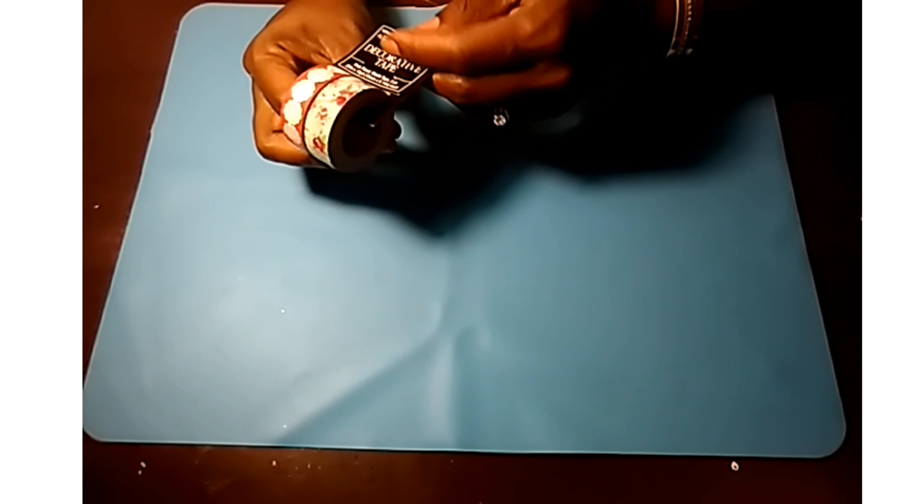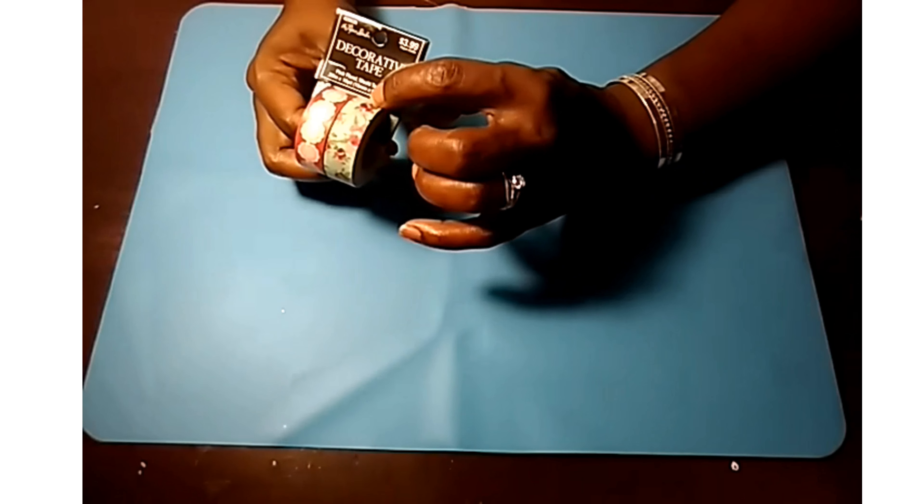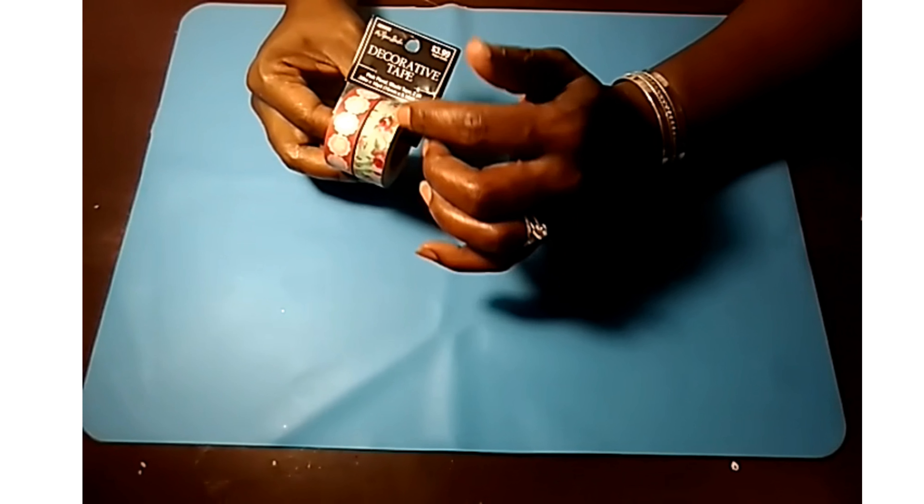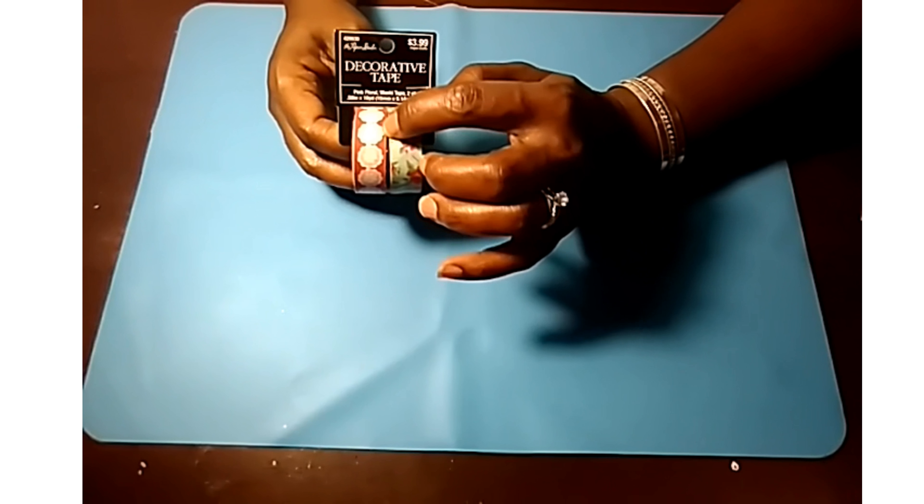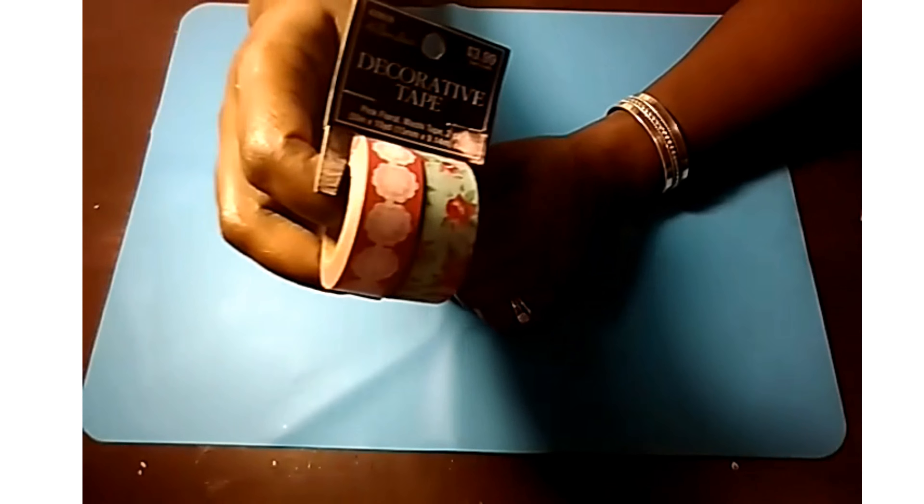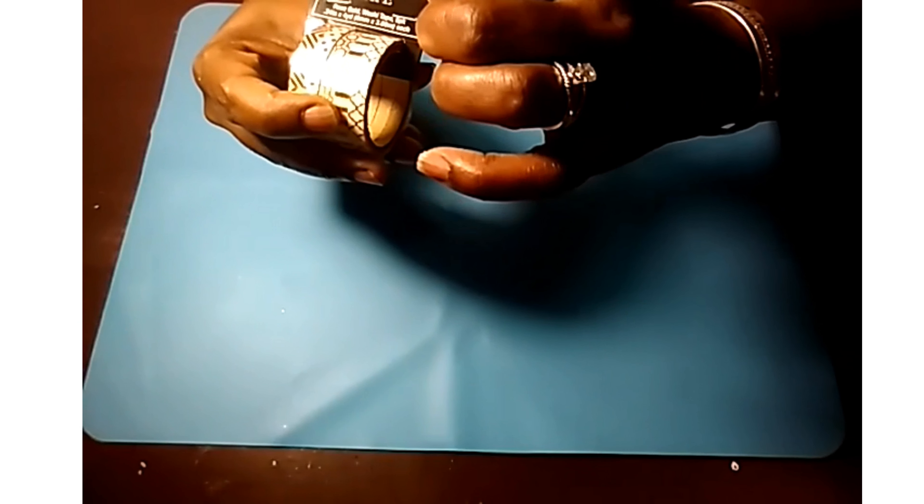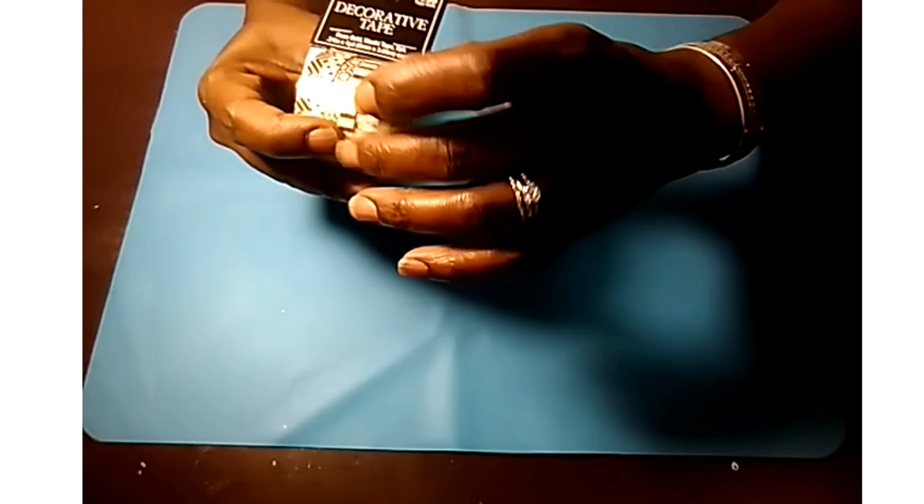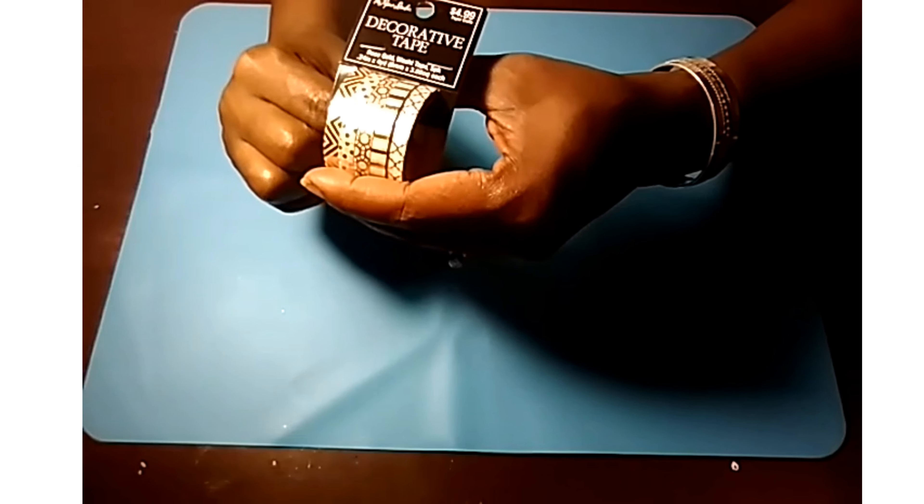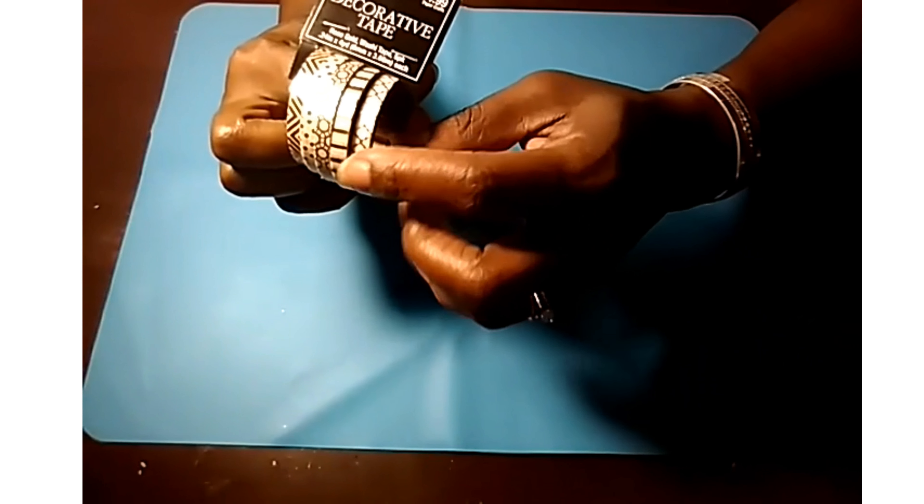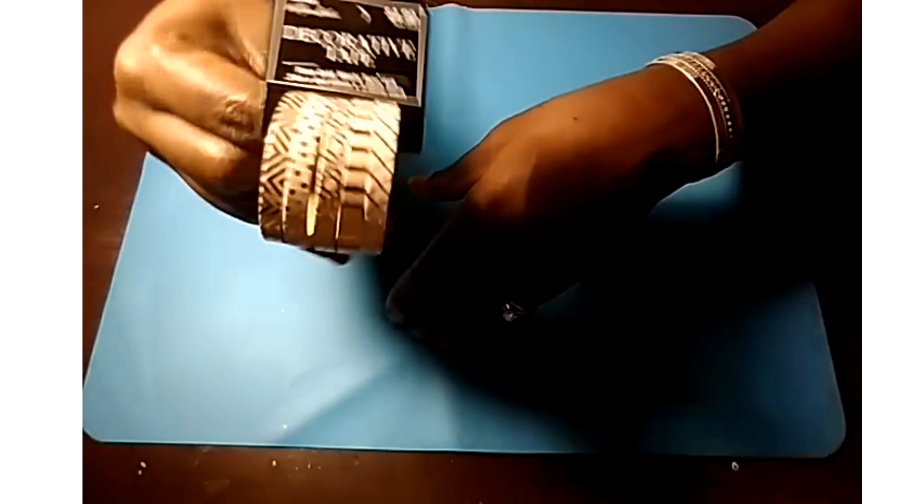Washi tape. Now this is like a light teal, light Tiffany blue, if you will, with roses. And then this one is red, a vintage red with white doilies on it. I thought that was so cute. And then I got the five pack of the thin washi tape. Rose gold, has different prints, polka dot, chevron, stripe. And I'm not quite sure what this pattern is called, but you have that one as well. I thought that was pretty.